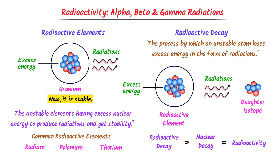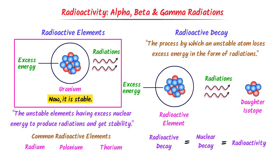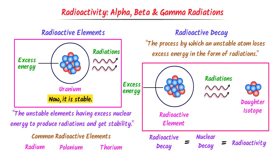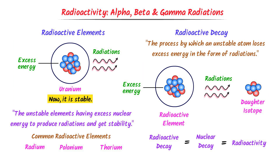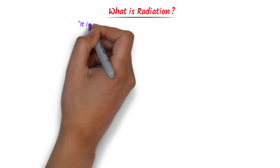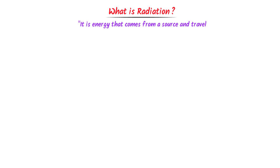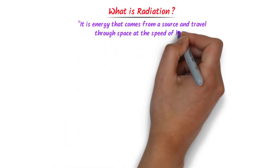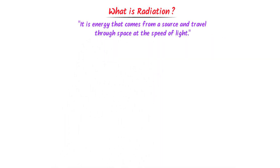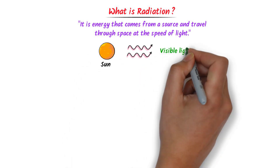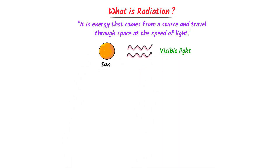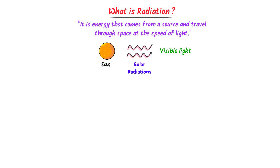Radioactive elements undergo radioactive decay or nuclear decay. Now, radiation is energy that comes from a source and travels through space at the speed of light. For example, sunlight or visible light is a form of radiation and its source is the sun — we call it solar radiation. Remember that radiation is a form of energy.